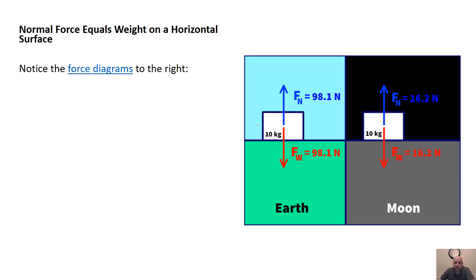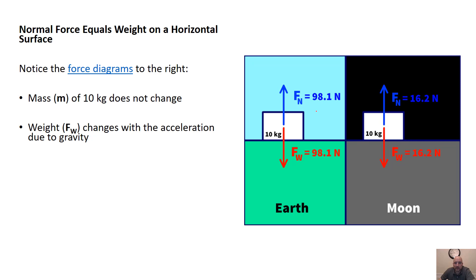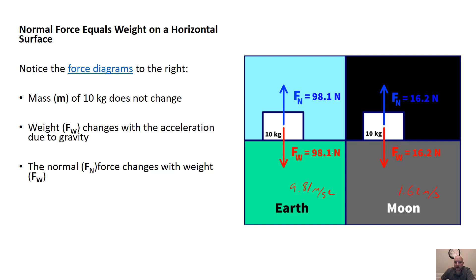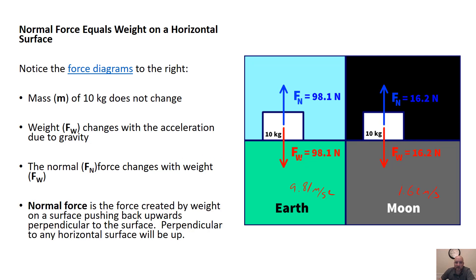Let's look at some force diagrams from a previous lesson. Mass does not change — it's 10 kilograms whether you're on Earth or the moon. The weight will change when you use Fw equals MG with Earth's g of 9.81 m/s² versus the Moon's g of 1.62 m/s². As weight pushes down on the Earth, the Earth pushes back up on the box — the box is in static equilibrium with a net force of zero. On a horizontal surface, the surface pushes back upward perpendicular to the surface, which means directly up.